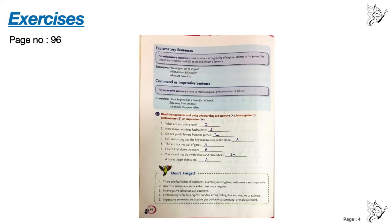Page number 96, question D: Read the sentences and write whether they are assertive (A), interrogative (I), exclamatory (E), or imperative (Im). Number one: What are you doing here? — This is a question, write I. Number two: How many pets does Radha have? — Write I. Number three: Do not pluck flowers from the garden. — This is an order, write Im. Number four: Neil Armstrong was the first man to walk on the moon. — This is a statement, write A.